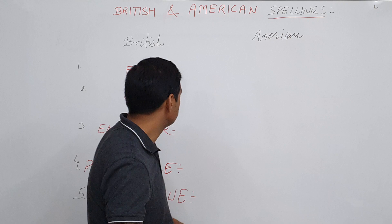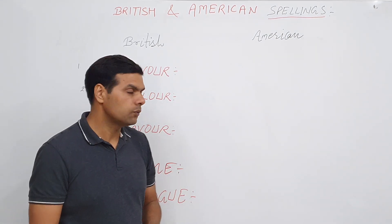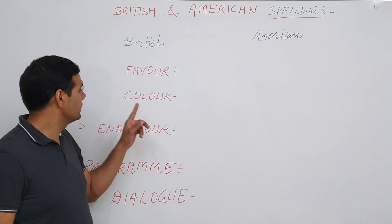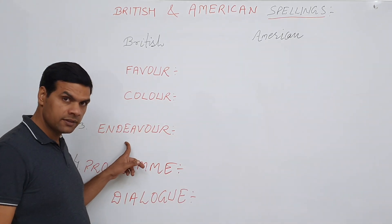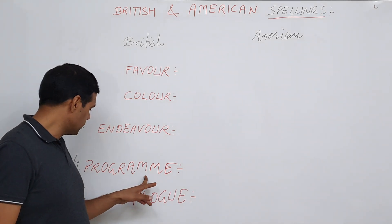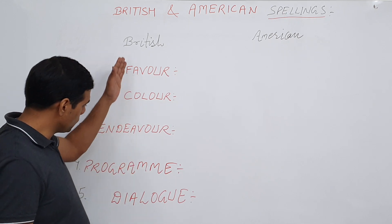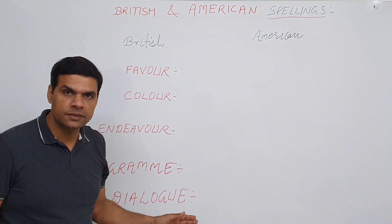What is British English? Here we have taken up five important words which are very commonly used. Word number one is favour, then colour, then endeavour. Endeavour also happens to be the name of a very famous SUV by Ford. The fourth word is programme, and then dialogue. This is the way the British spell these words.